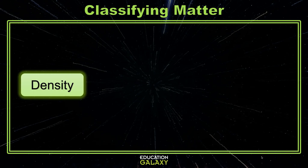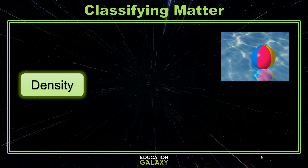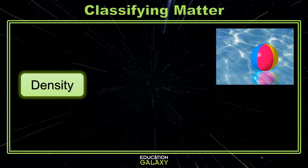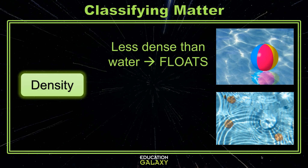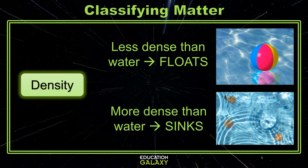Density is how closely or loosely packed the molecules of a substance are. A good way to compare densities is whether something floats or sinks in water. Things that are less dense than water will float, and things that are denser than water will sink. You can compare many substances against each other in this way.